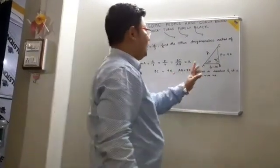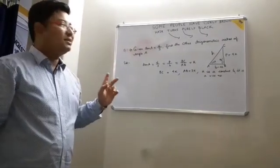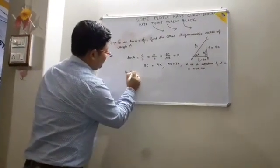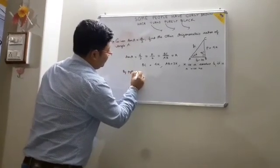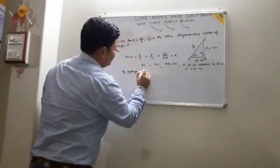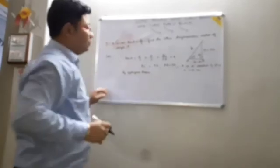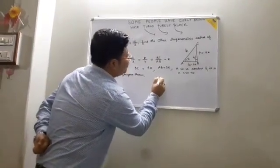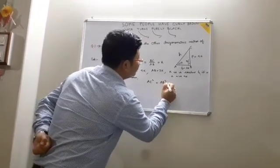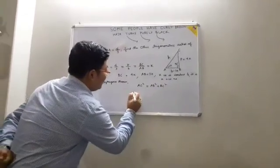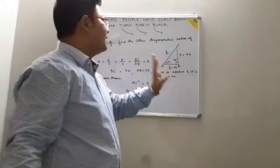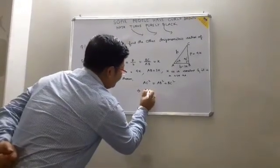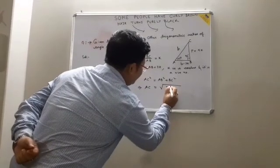Now we will find out the hypotenuse AC. In a right angle triangle, by the Pythagorean theorem, AC squared equals AB squared plus BC squared. AB is 3K and BC is 4K, so AC equals root of (3K squared plus 4K squared) equals root of (9K squared plus 16K squared).